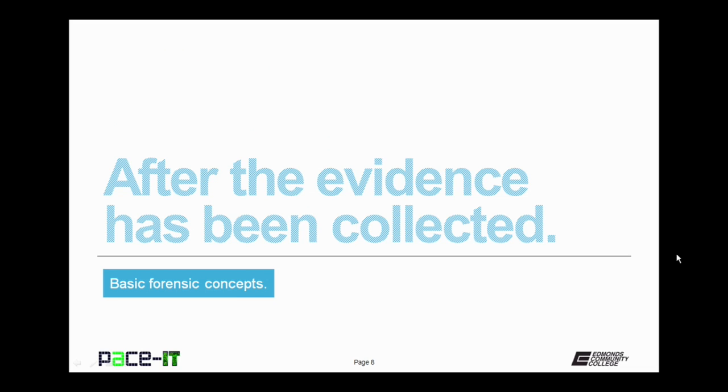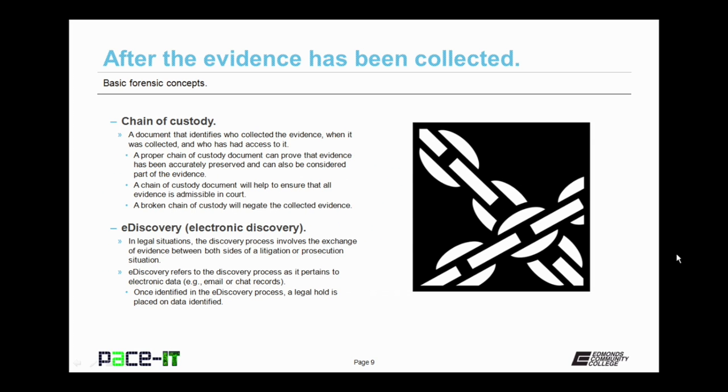Now let's move on to a discussion about what happens after the evidence has been collected. And the first item is the chain of custody. Now this actually starts during the collection period and survives the collection period on into the future. The chain of custody is a document that identifies who collected the evidence, when it was collected, and who has had access to it since it has been collected. Proper chain of custody document can prove that the evidence has been accurately preserved. And the chain of custody document can also be considered part of the evidence. A chain of custody document will help to ensure that all the evidence that is collected is admissible in court. A broken chain of custody will negate the collected evidence. And by that, if your chain of custody gets broken, your evidence is no longer considered evidence.